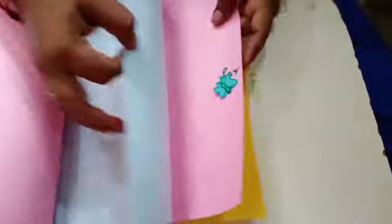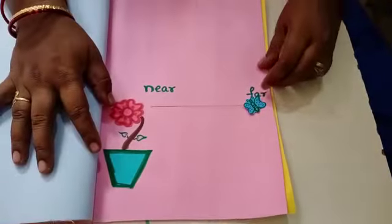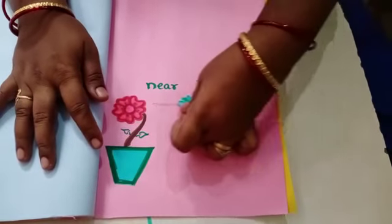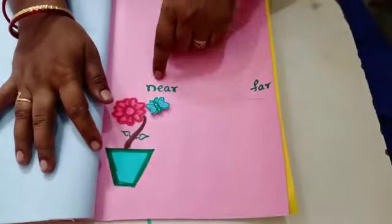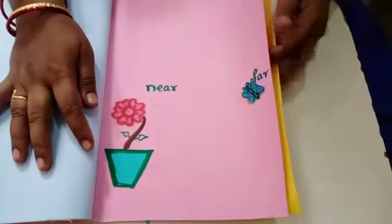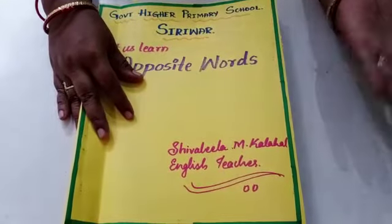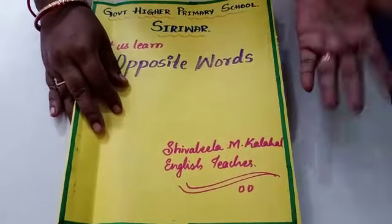Near and far are the opposite words. Far, near, far. And with the help of this TLM we can teach opposite words. Thank you.